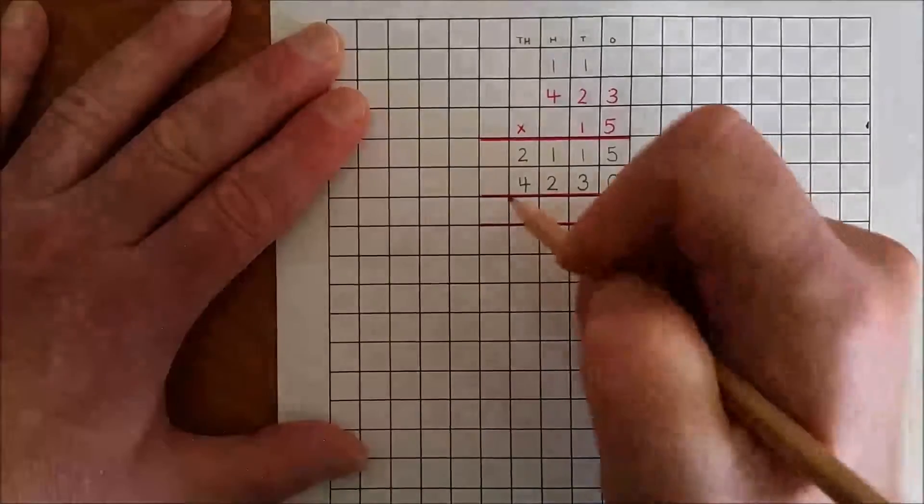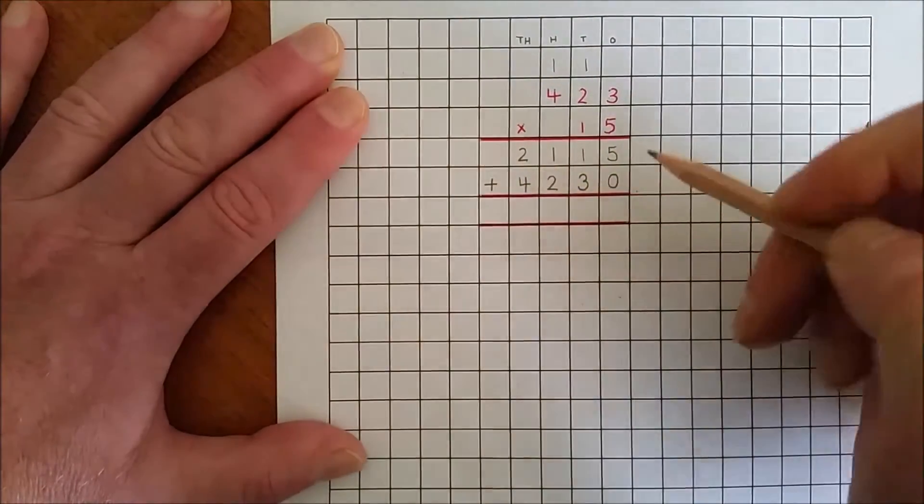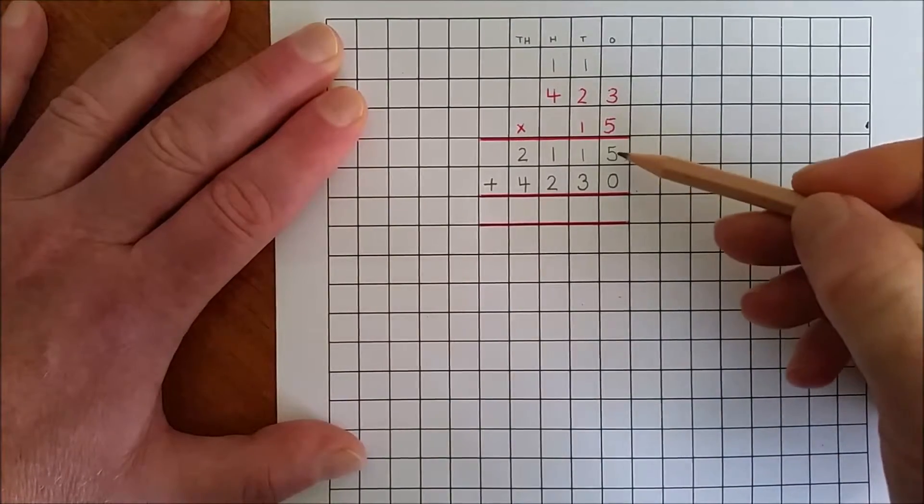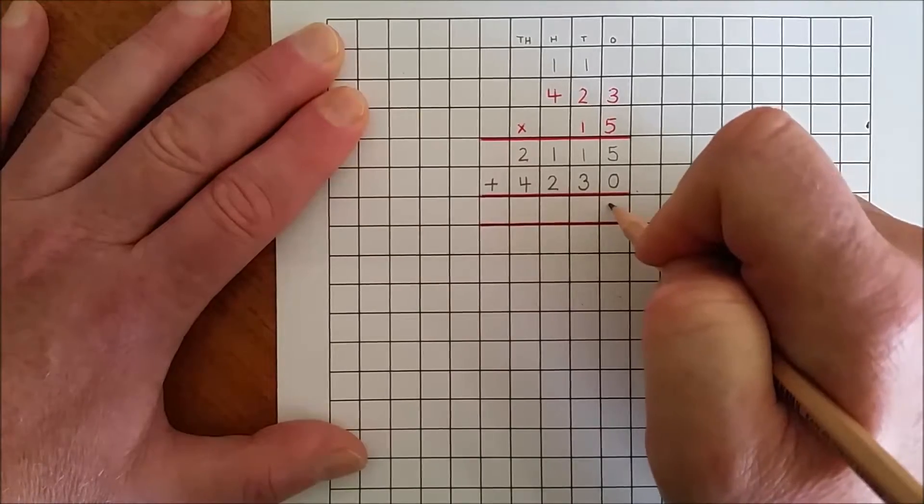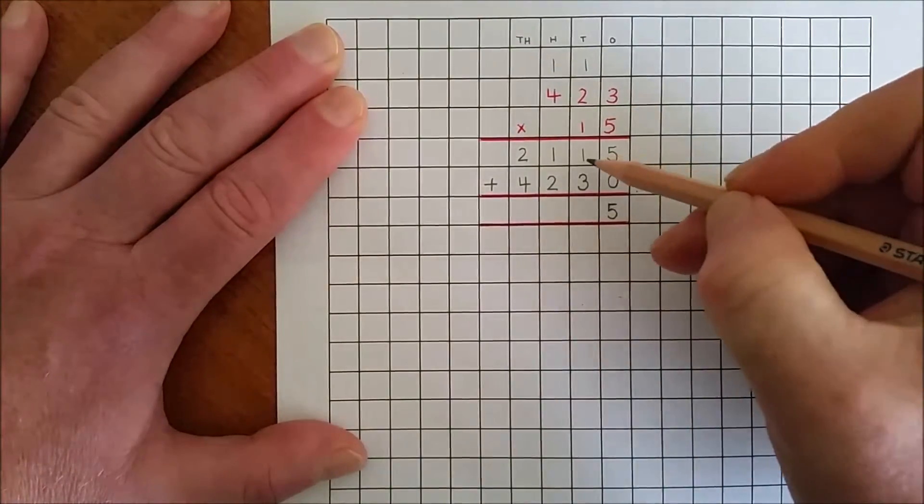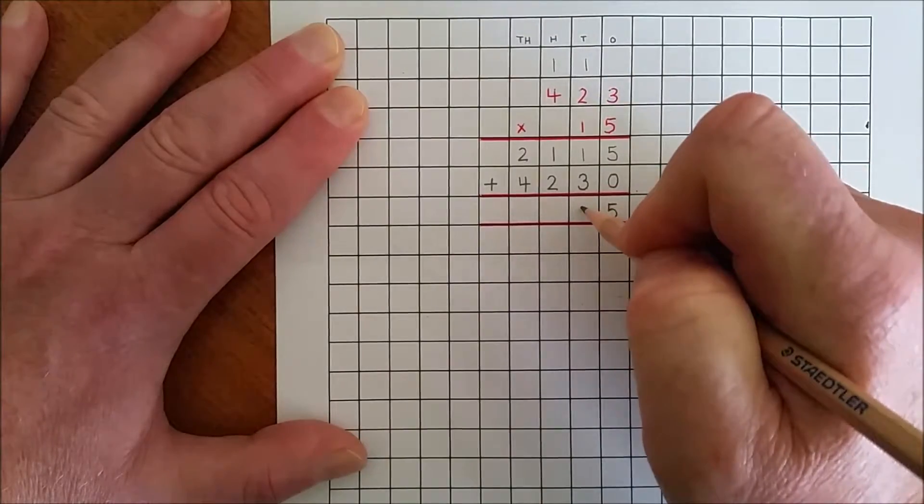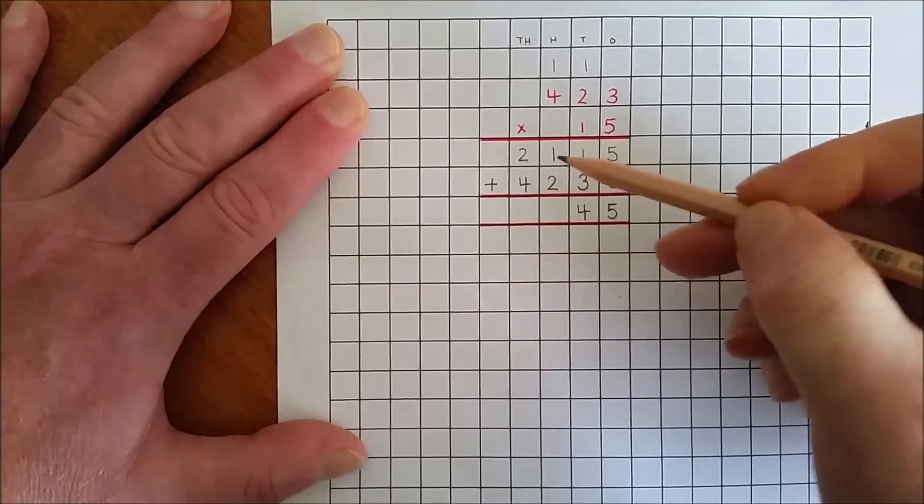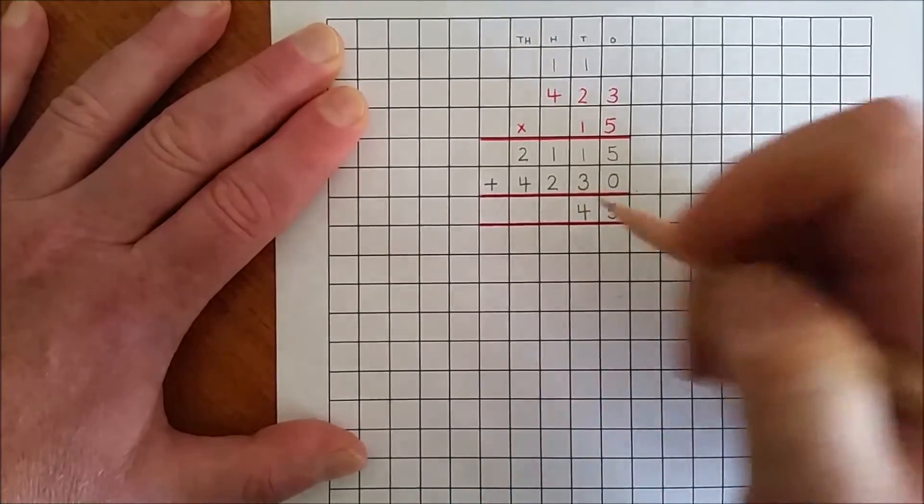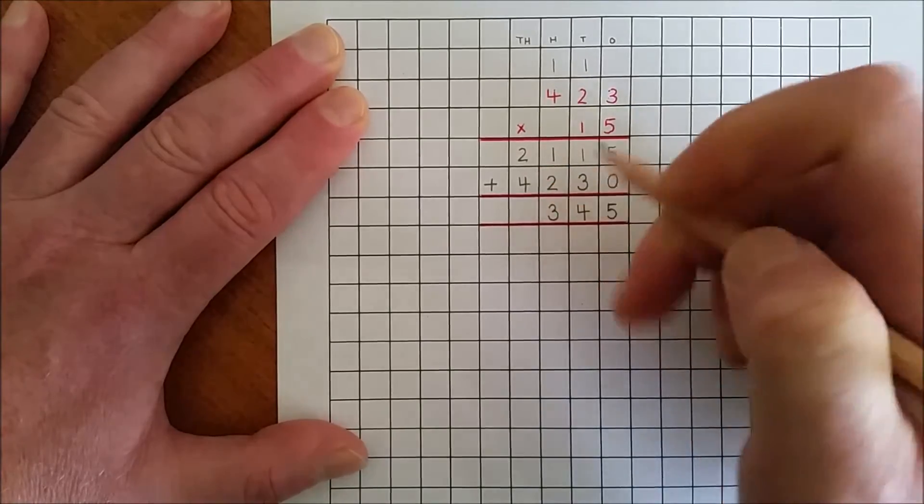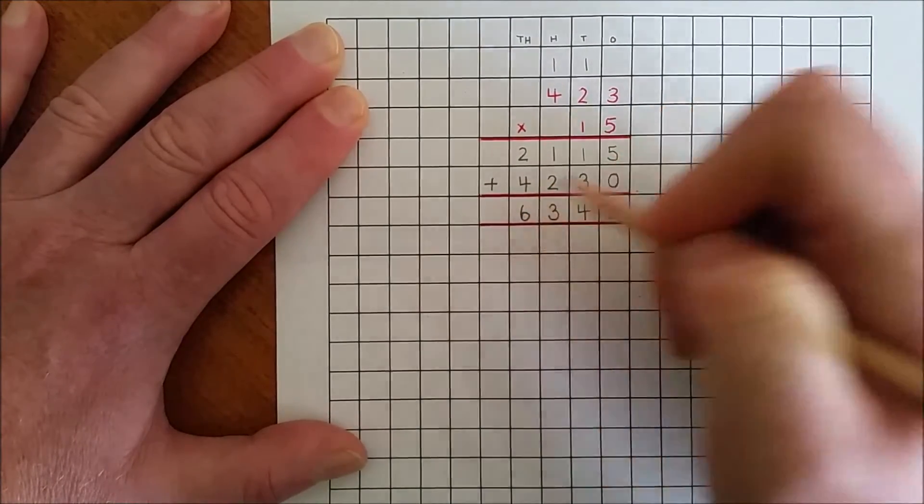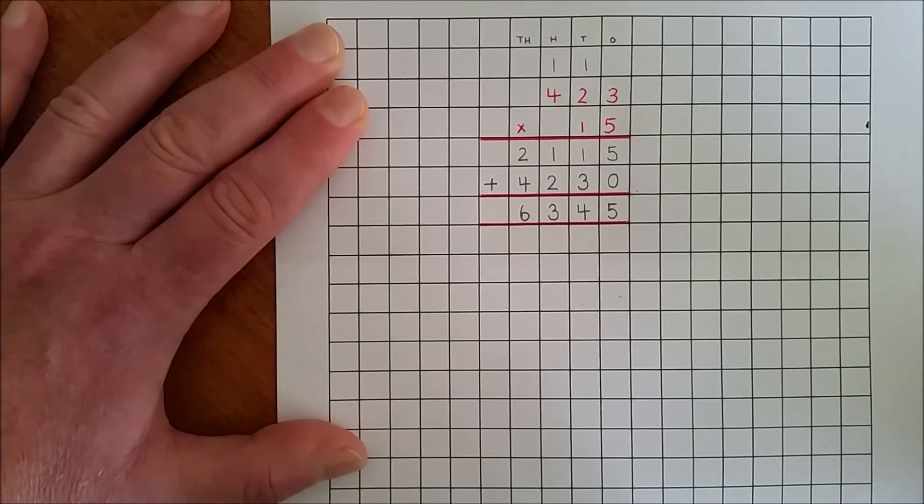Now add the digits. Four tens. One hundred and two hundred is three hundred. Two thousand and four thousand is six thousand. Four hundred and twenty-three multiplied by fifteen, and the answer is six thousand three hundred and forty-five.